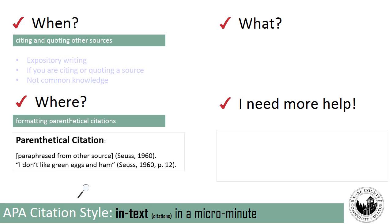In-text citations generally go at the end of your sentence and are closed with a period at the end. So if you paraphrase from another source, your in-text or parenthetical citation goes in at the end of the sentence. If you use a direct quote, put the direct quote inside quotation marks and then include your in-text citation at the end.